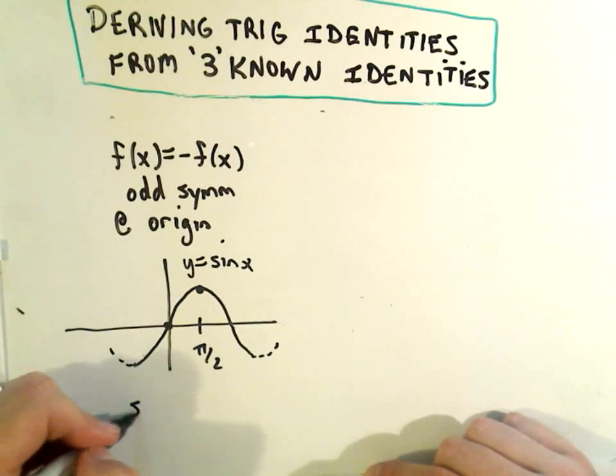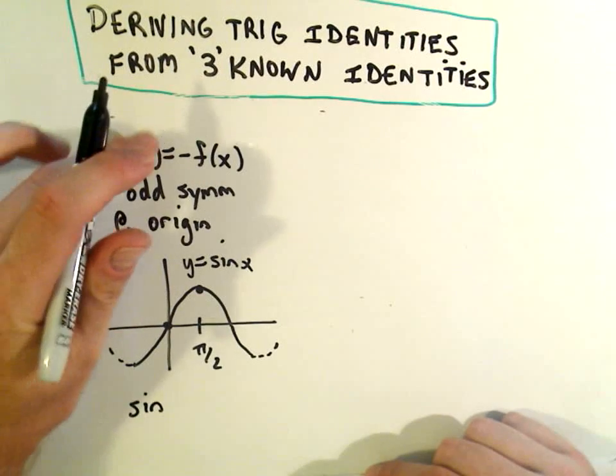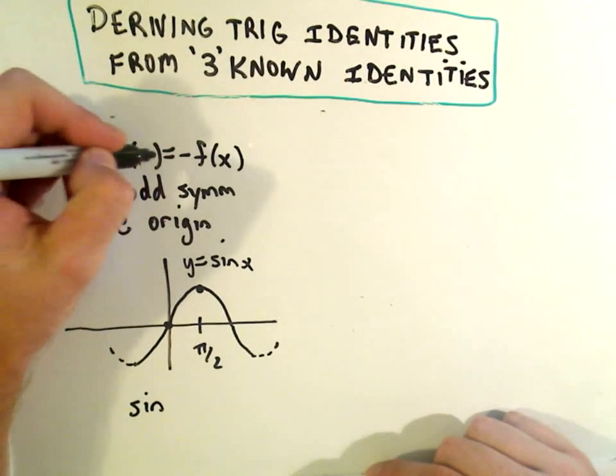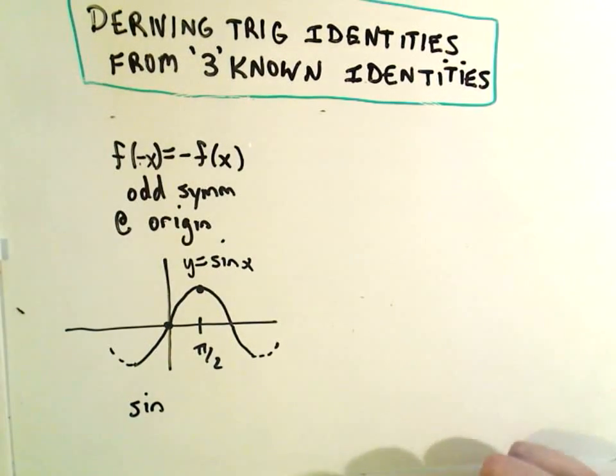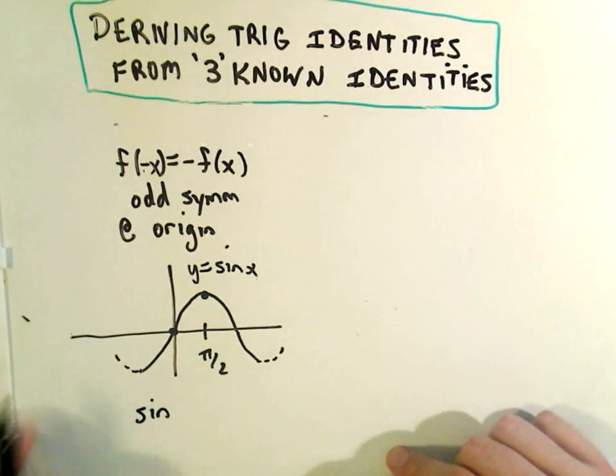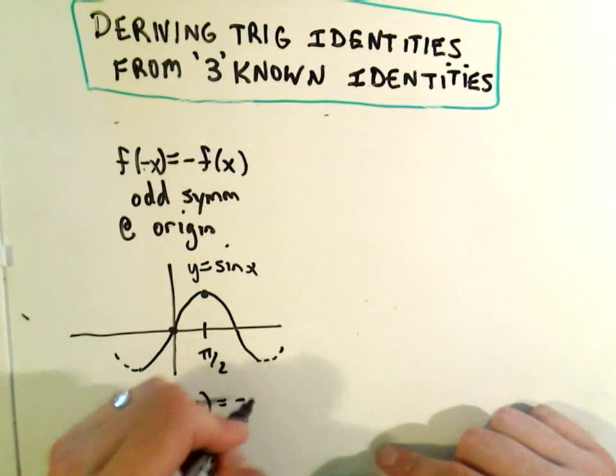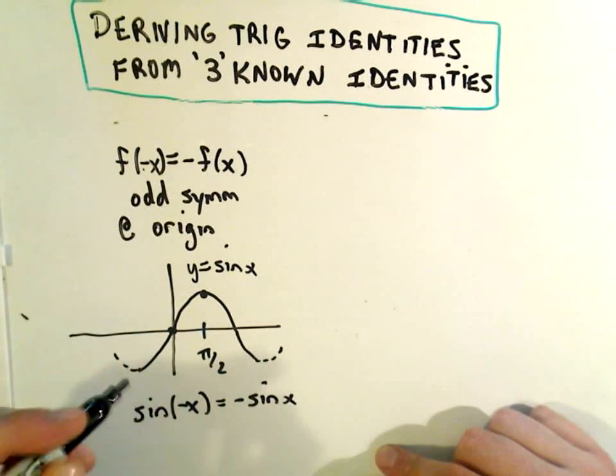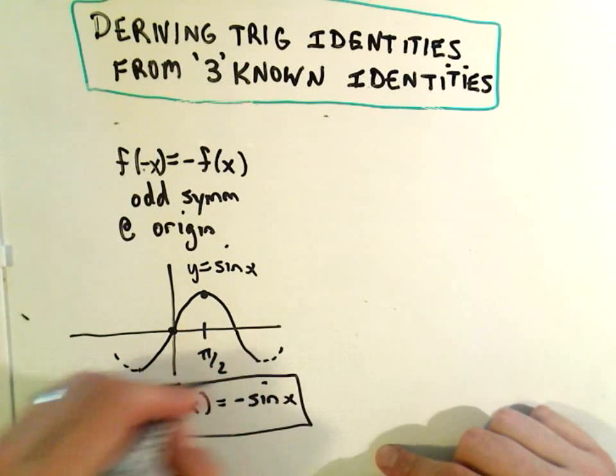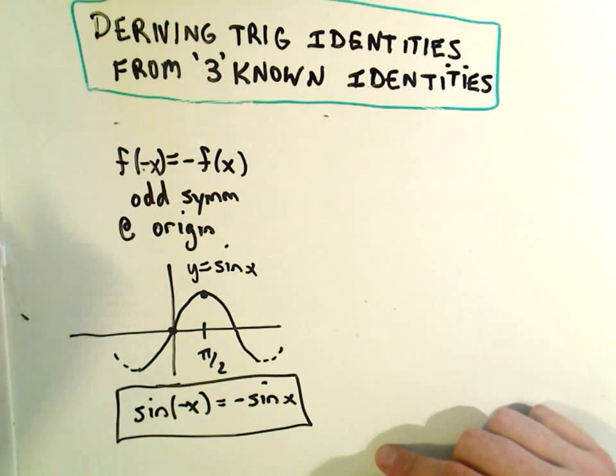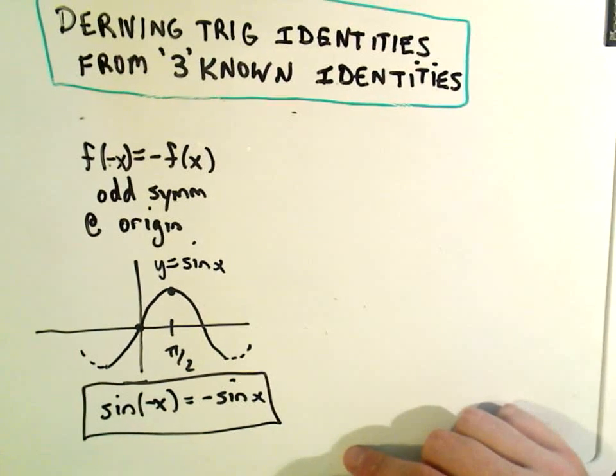So just using this definition, we'll get that sine of negative x—excuse me, my error up here, it should be f of negative x equals negative f of x. So from this identity, it says sine of negative x is going to equal negative sine of x. So that's going to be another trig identity, and that just comes again from symmetry about the origin.